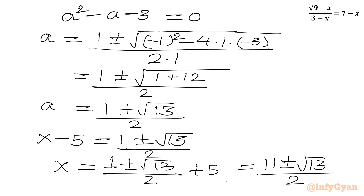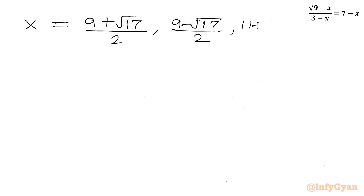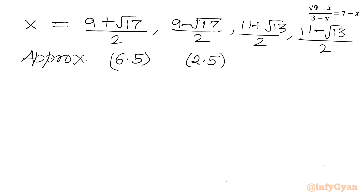We now have four candidate values: x equals (9 plus root 17)/2, (9 minus root 17)/2, (11 plus root 13)/2, and (11 minus root 13)/2. Using approximate values (root 17 ≈ 4, root 13 ≈ 3.6), these are approximately 6.5, 2.5, 7.3, and 3.7.